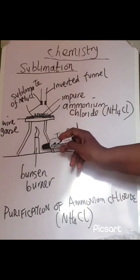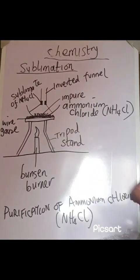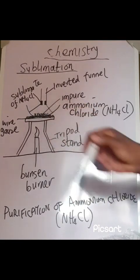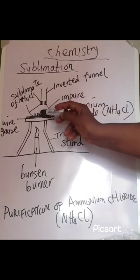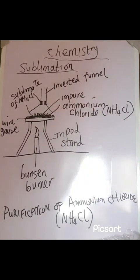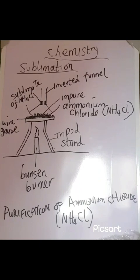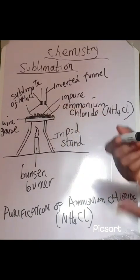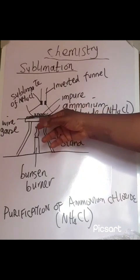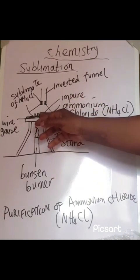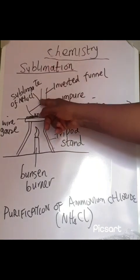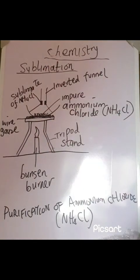This is how it is done: you set up the tripod stand, place the Bunsen burner under it, place the impure ammonium chloride in a glass container — a watch glass — then start heating it. When it sublimates, the pure ammonium chloride is collected on the inverted funnel above while the impure substance is left behind. That is the purification of ammonium chloride.